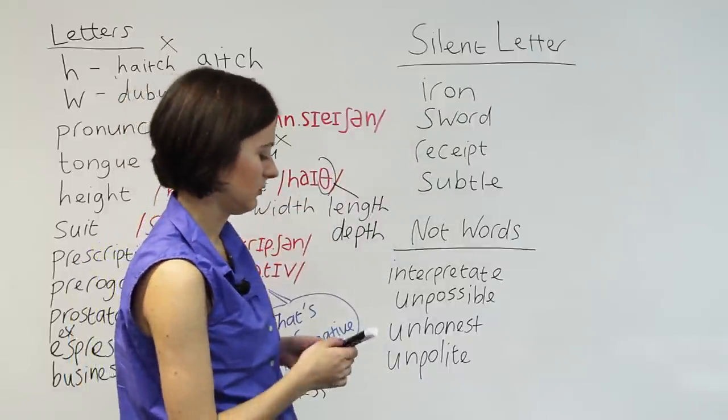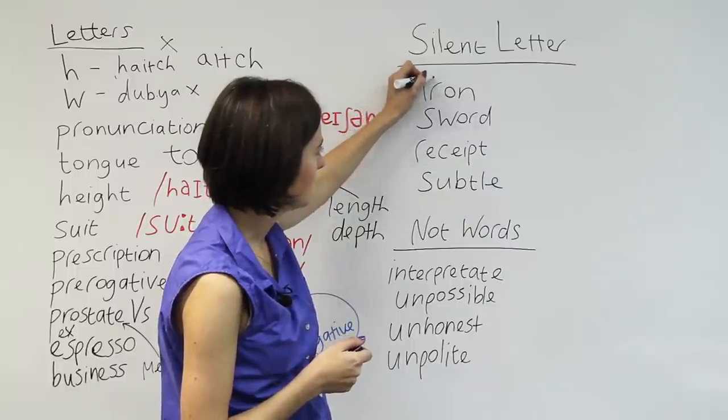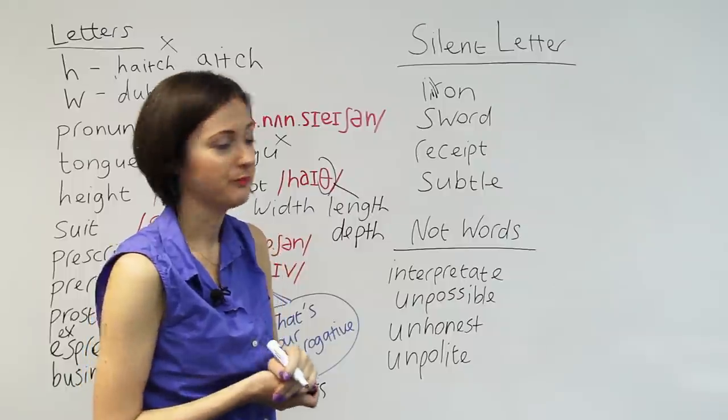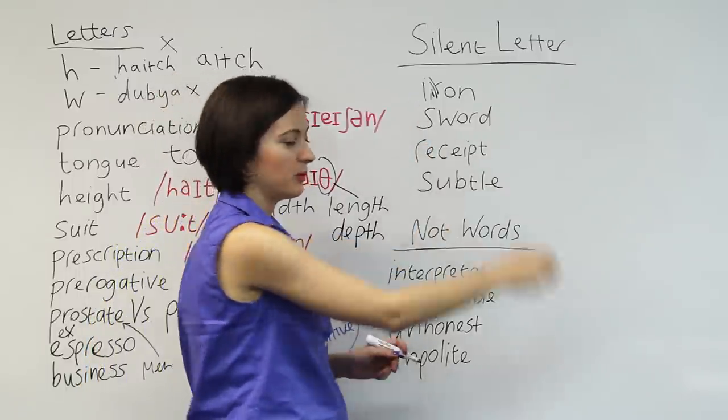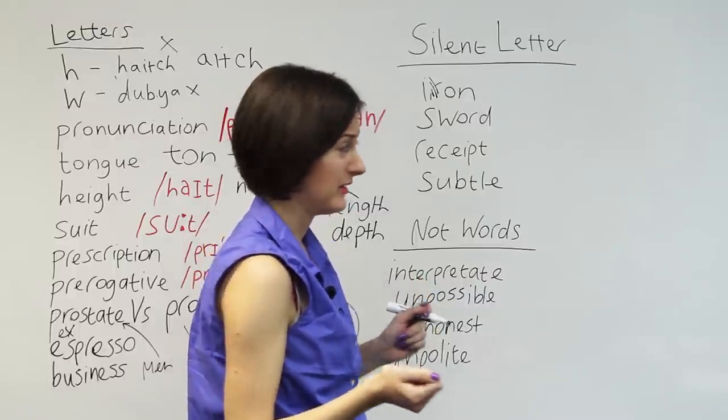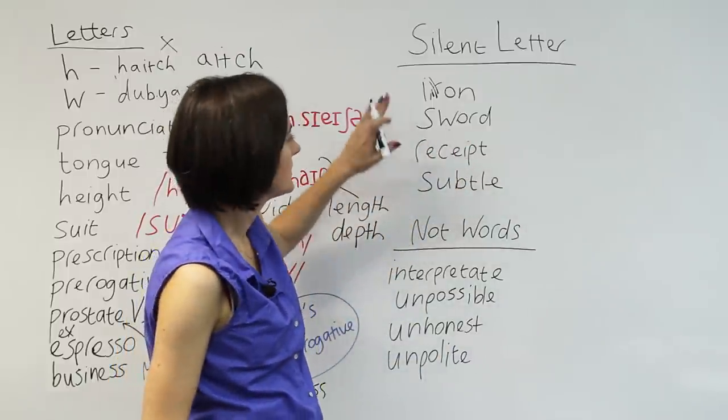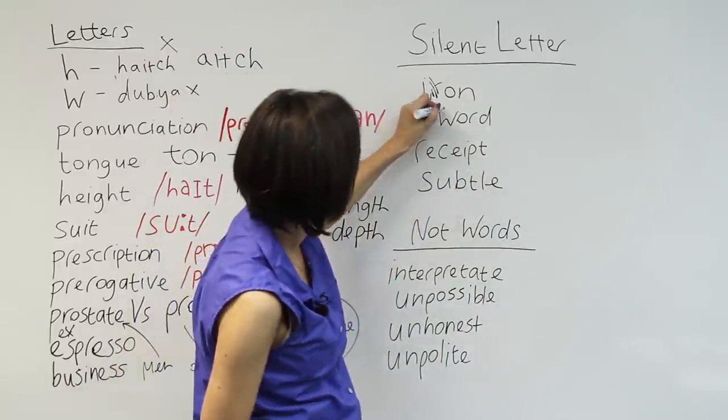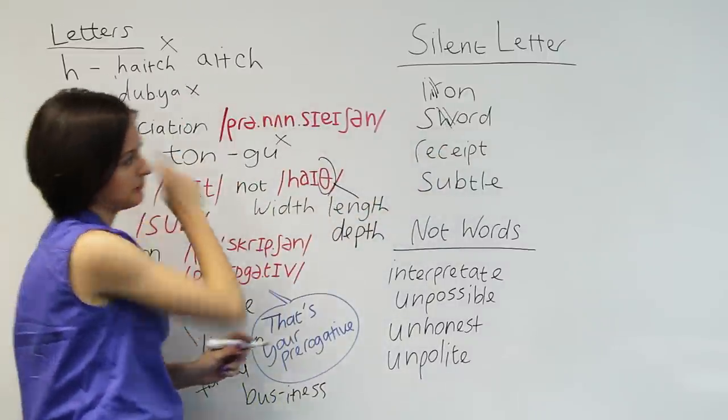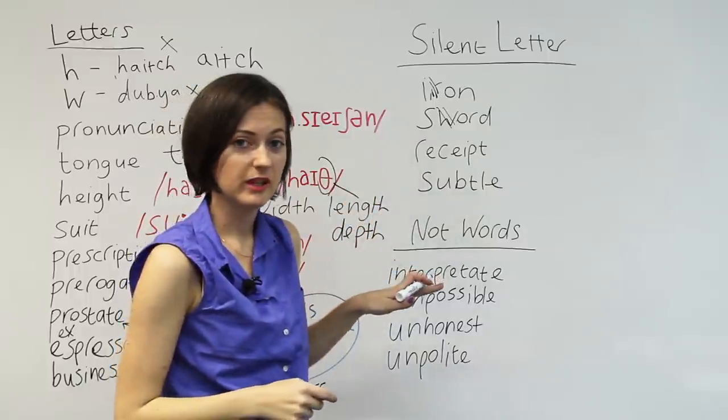Iron. Iron. We don't say the R. Well, how do I say that? We don't say the R. It's just like that, iron. This one, if you're having a fight, not many people use these for a fight nowadays, but it's a kind of weapon. Sword. Silent W.